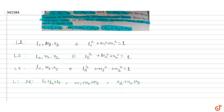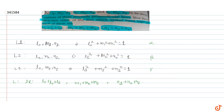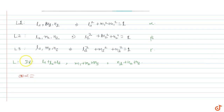Let us assume that line L makes angle alpha with L1, angle beta with L2, and angle gamma with L3. From here, let us write the value of cos alpha. The value of cos alpha we get using the dot product — we take the dot product of L's direction ratios with L1's direction cosines.